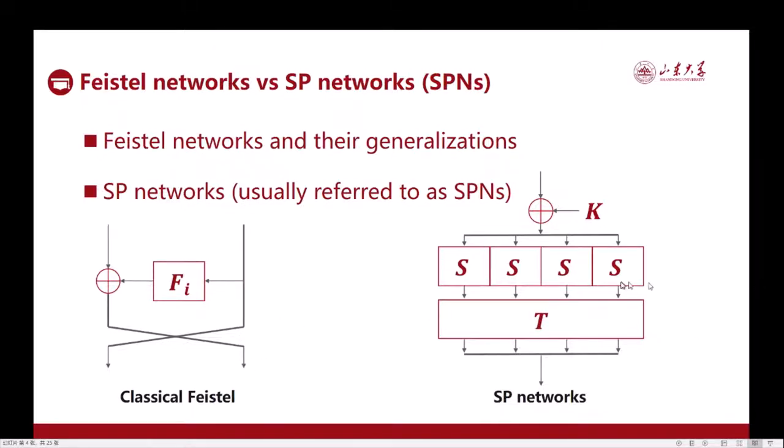The second is the SP network. In this structure, in every round, the entire input is divided into a number of chunks, and every chunk goes into a nonlinear S-box. The outputs of the S-boxes are then merged with the linear diffusion layer T. An important example is the Advanced Encryption Standard and the reasonably accepted ISO standards such as Skinny and Deoxys.